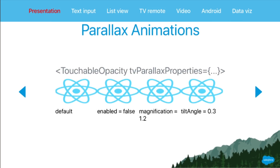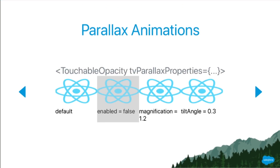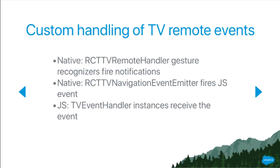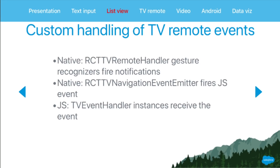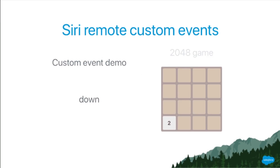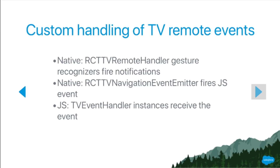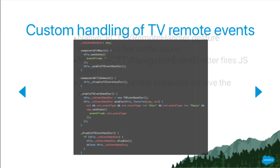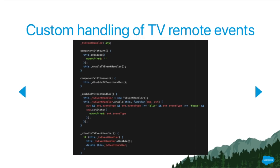We also put in a TV remote event handler so that you can specifically look for events coming from the remote control in your app and respond to them. This demo is showing a component that tells you which key on the remote control was pressed. This is essentially boilerplate code that you would put in your component if you wanted to respond to TV remote events.